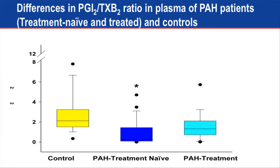And we found very interesting results. First of all, the ratio between prostacyclin and thromboxane was very low — significantly lower in treatment-naive PH patients compared to controls. And on treatment, this ratio seemed to improve. So that suggests that the therapies we have available decrease the level of vasoconstrictors and positively influence the levels of the vasodilator prostacyclin.